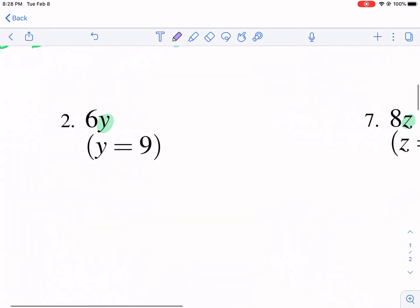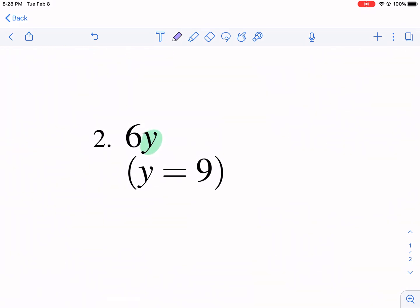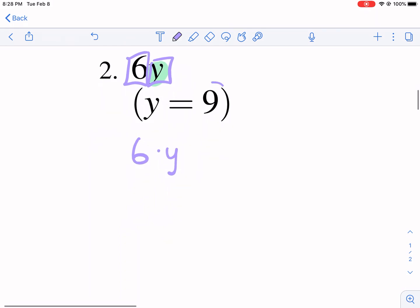But what about something like this? What does this 6y represent? What I do, anytime there's a number directly next to a letter it's multiplication. So technically this could be 6 times y. And then we fill in the value. We substitute that value. We plug it in. We rewrite it. And we get 6 times 9. And that of course is 54.